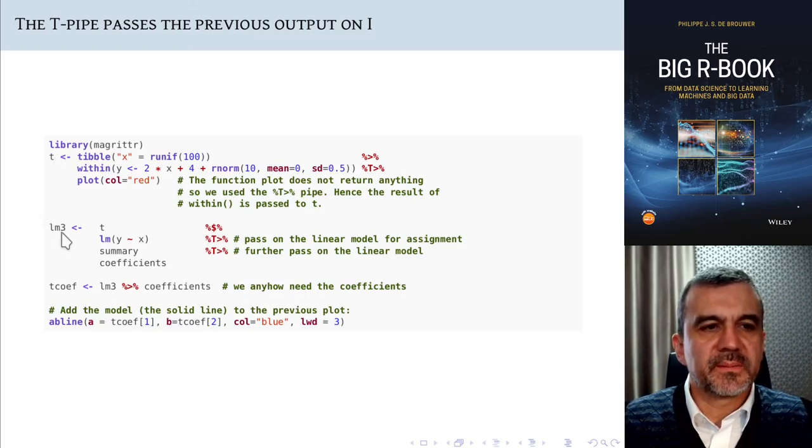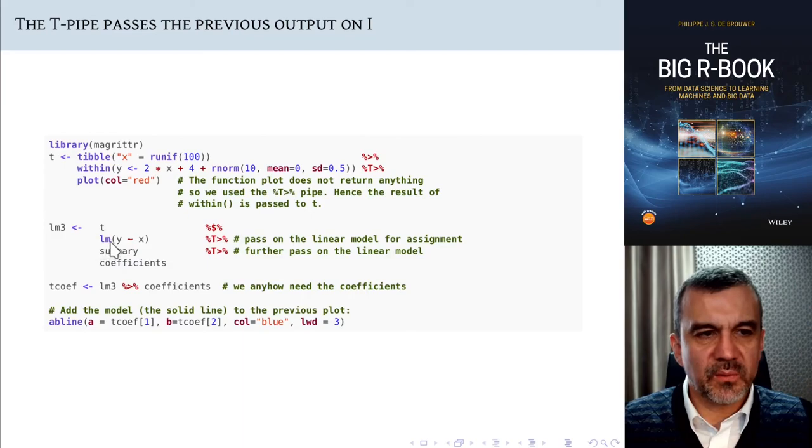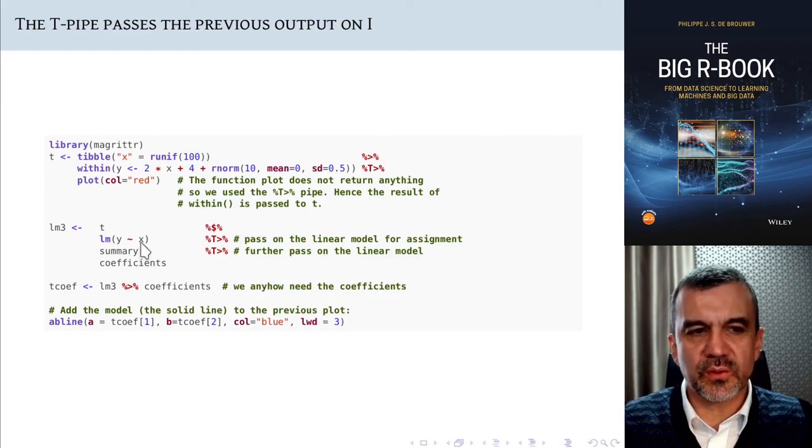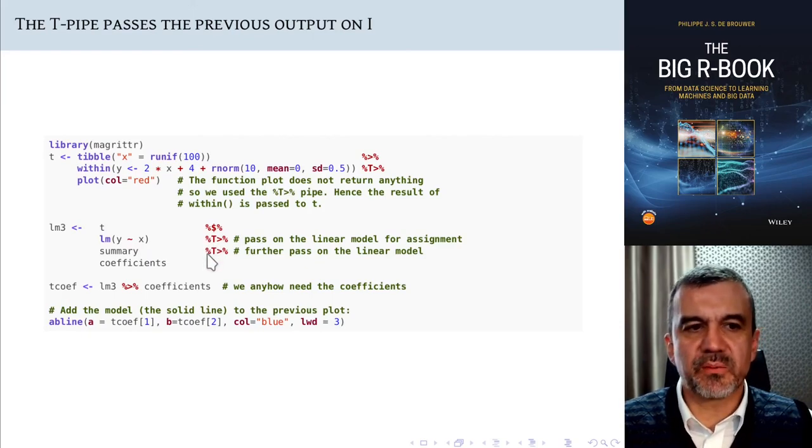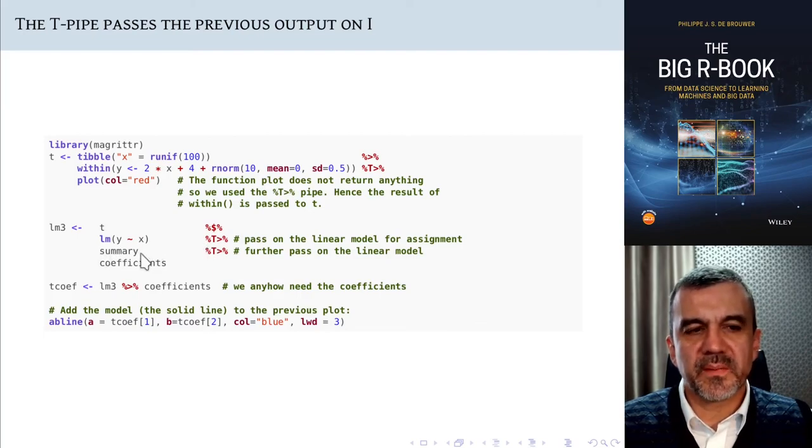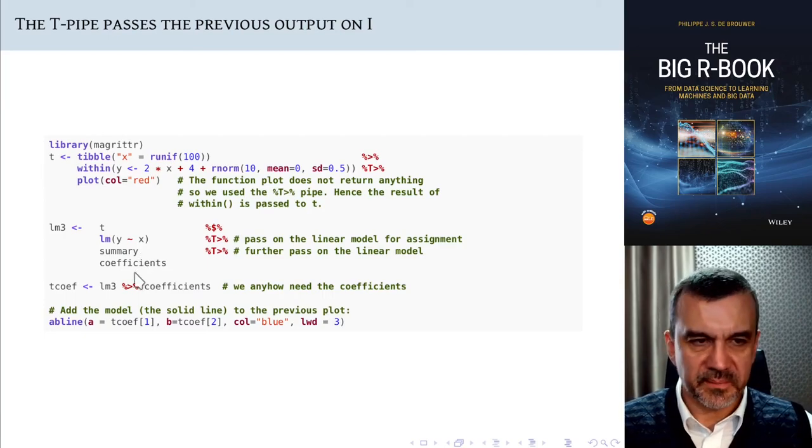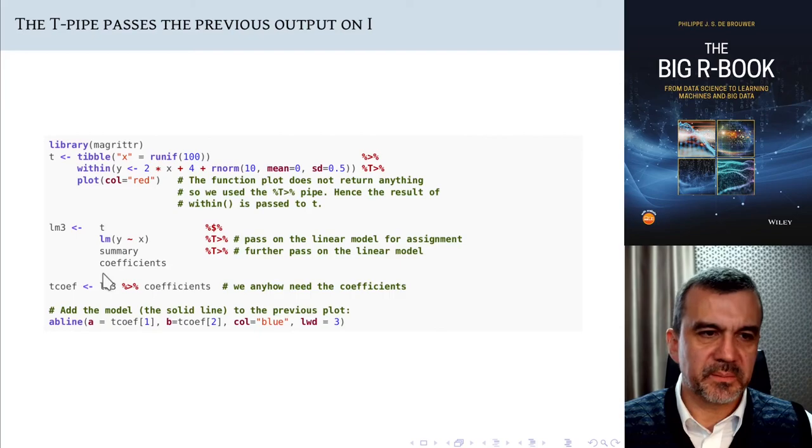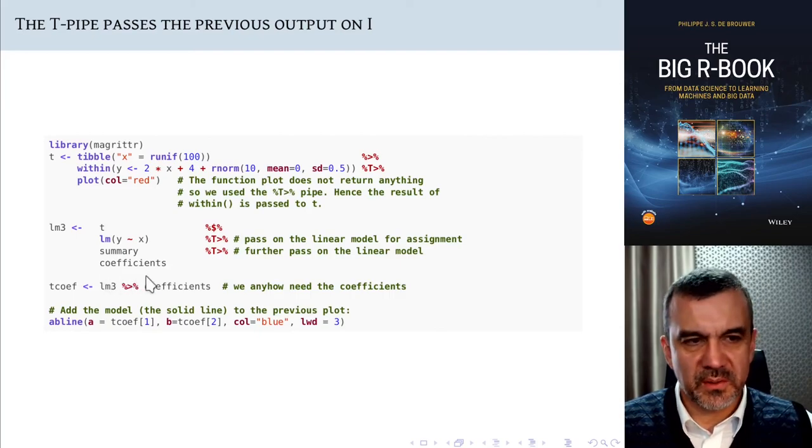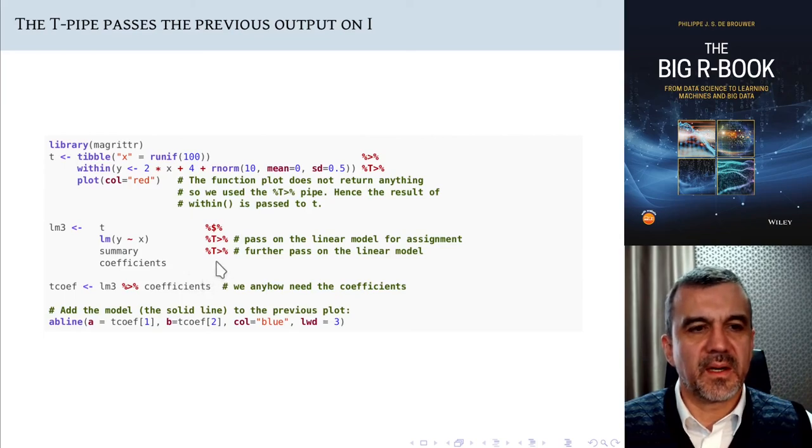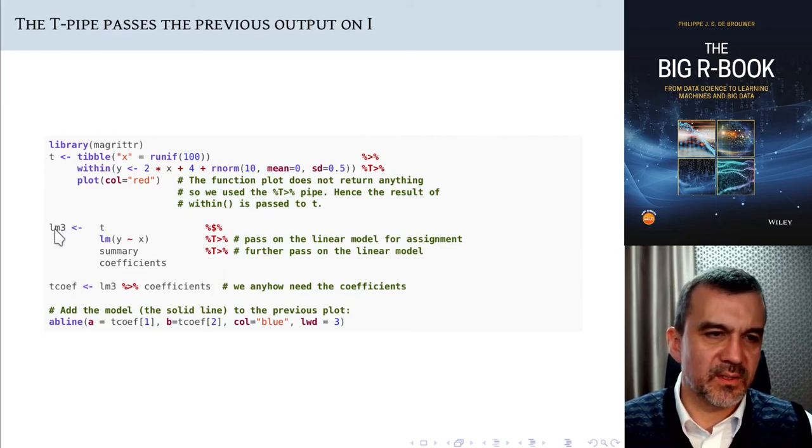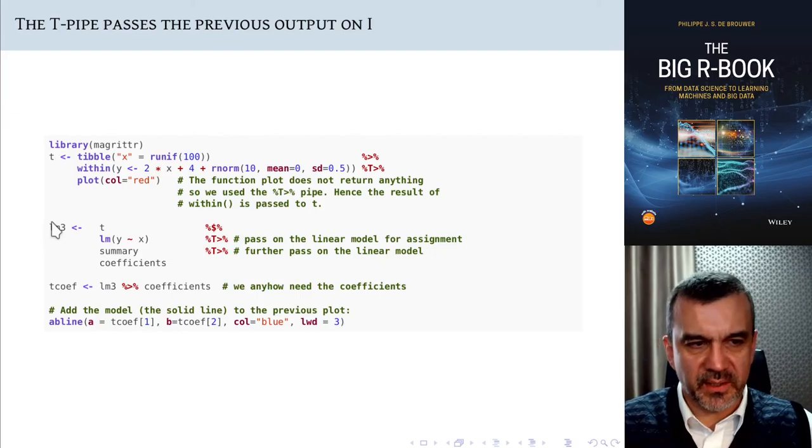Another example would be that you want to create the linear model with lm here. You start with t, you create a linear model and then you still want to see the summary and the coefficients. But those things do not have to be passed on. So you use twice the t-pipe. And the t-pipe will tell you, well, whatever is done here, it is not part of the outcome of the whole block or will not be passed on to the next line. After that you could continue with other things. For example, well, we could take one of the coefficients and if we pass it on with a normal pipe, in that case that will be that particular coefficient that we want to pass on.